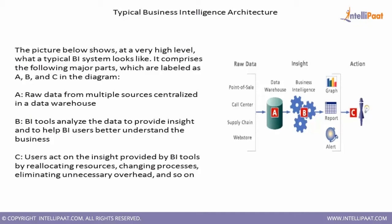At a base level, the business intelligence architecture starts with raw data and creates insights on top of it. The first layer is always the data layer, which can have multiple data sources — for example, call center data, supply chain data, and web store data. All this raw data needs a single place to be stored, which is your data warehouse. A data warehouse is a centralized storage where we pull all the raw data.